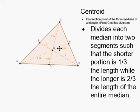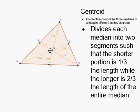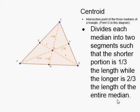The way it's normally stated: segment BE has a total length of six, and the shorter segment of two is 2 out of 6, which simplifies to one-third. So the shorter segment is one-third of the entire median length while the longer segment is two-thirds. We say that the centroid divides each median into two segments such that the shorter portion is one-third the length and the longer is two-thirds the length of the entire median.